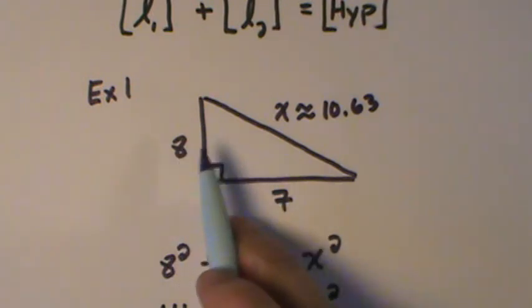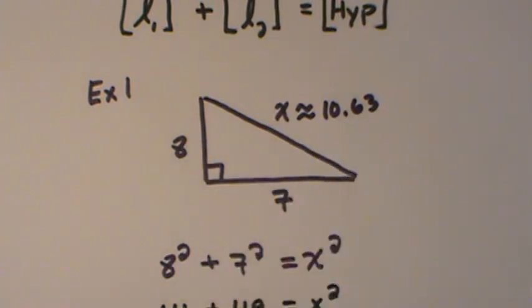I've got a 7, an 8, and a 10.63. That's our first example for the Pythagorean Theorem.